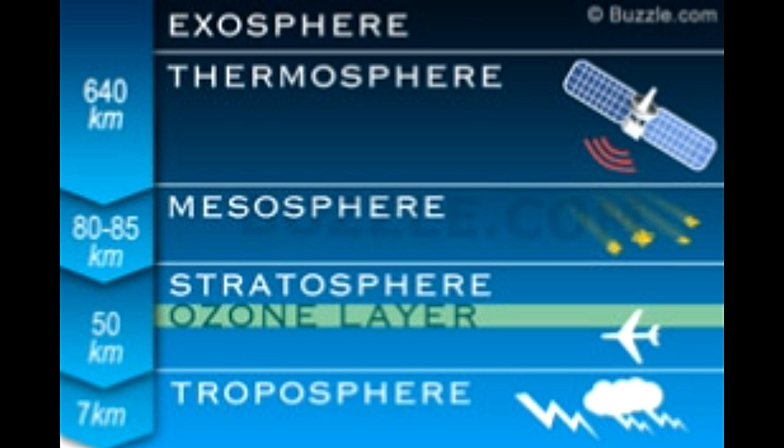Atmosphere, derived from atmos meaning vapor and sphera meaning sphere, is composed of gases that surround our planet. It is held in place by the Earth's gravity. It is about 78.08% nitrogen, 20.95% oxygen, 0.38% carbon dioxide and 0.93% argon. The atmosphere also contains very small amounts of other gases and about 1% water vapor.